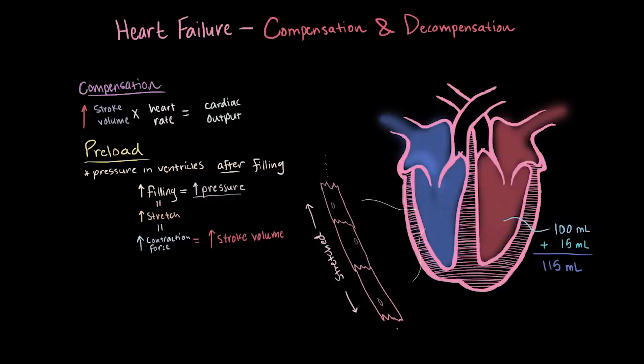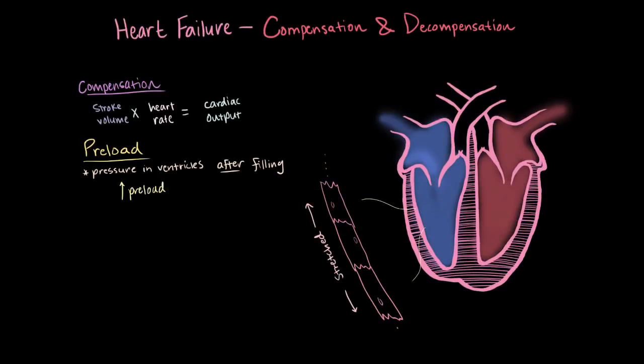And so this guy named Frank Starling saw this and kind of decided to cut corners and create this law that says as you increase your pressure or your preload, you also increase your stroke volume. And that's the Frank Starling law. Sweet! So increasing preload increases stroke volume and therefore your cardiac output, and is one way we can compensate.